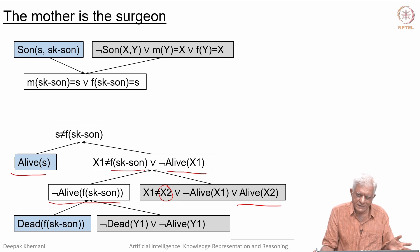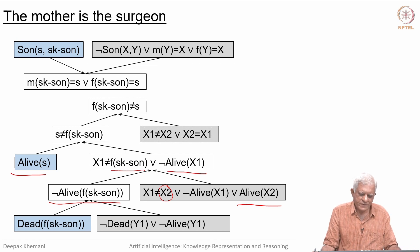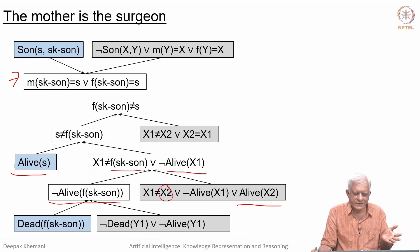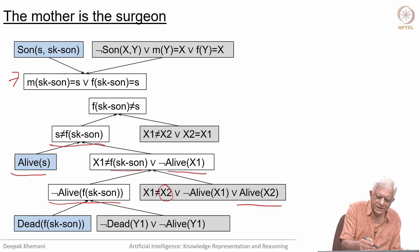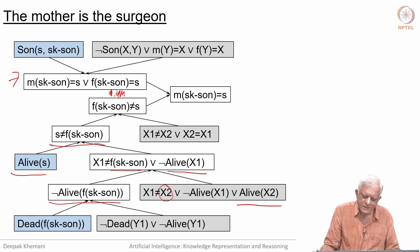The father of the boy is dead, the surgeon is alive, so the surgeon cannot be the father of the boy. We use the symmetry axiom because we want to cancel the fact that S is not the father with the clause that S is either the mother or the father. To match these, we flip using symmetry, bringing father-of-the-boy to the left and S to the right. They have the same pattern except for the negation sign, so we resolve them and get our answer: S is the mother of the boy.